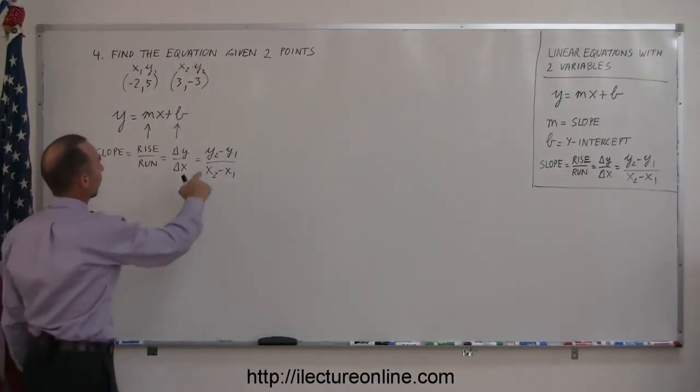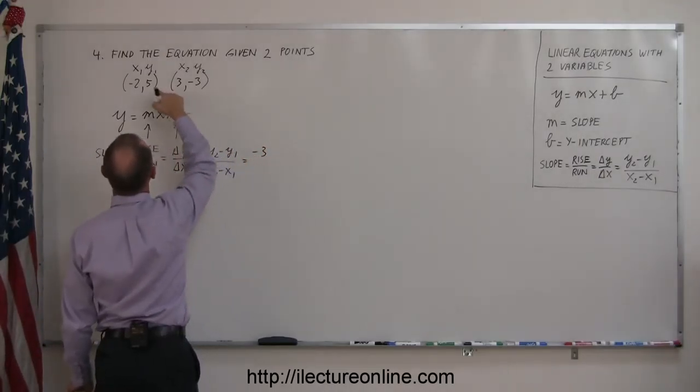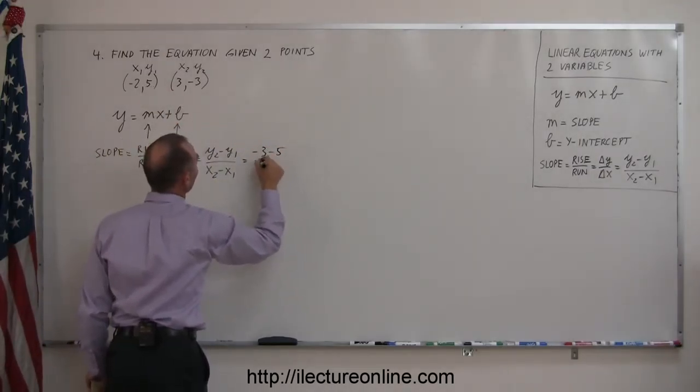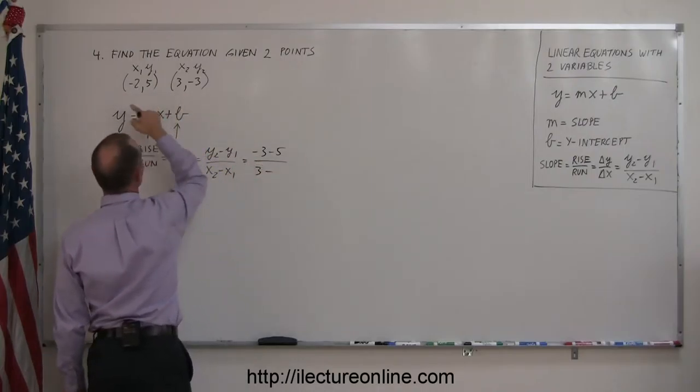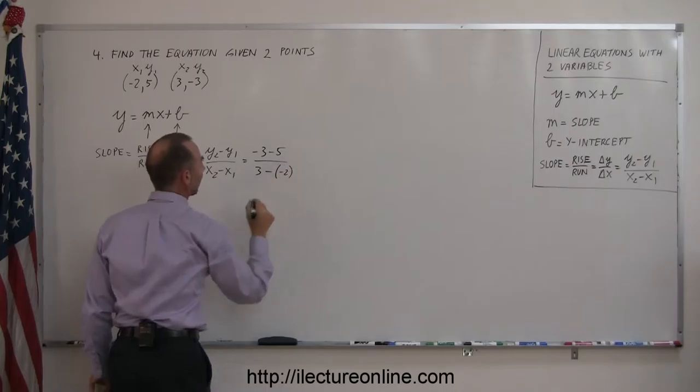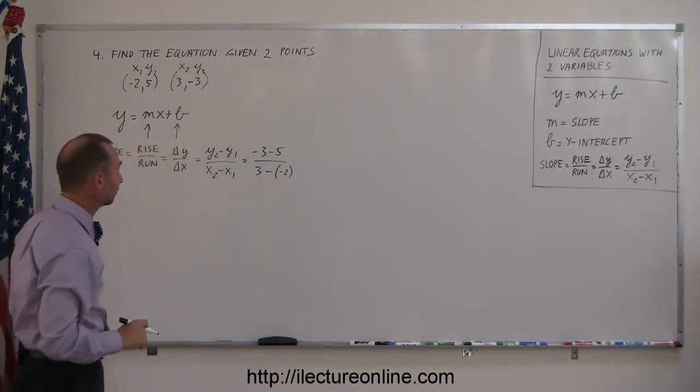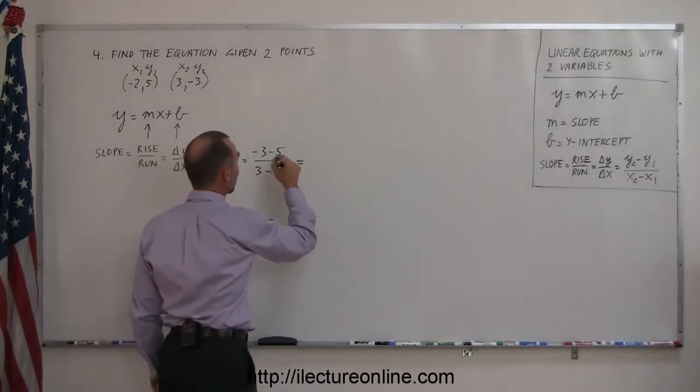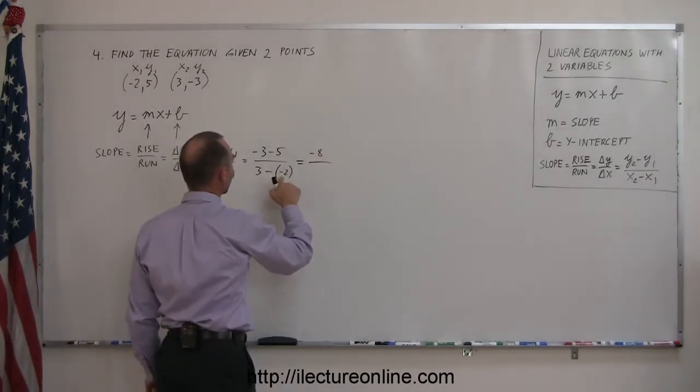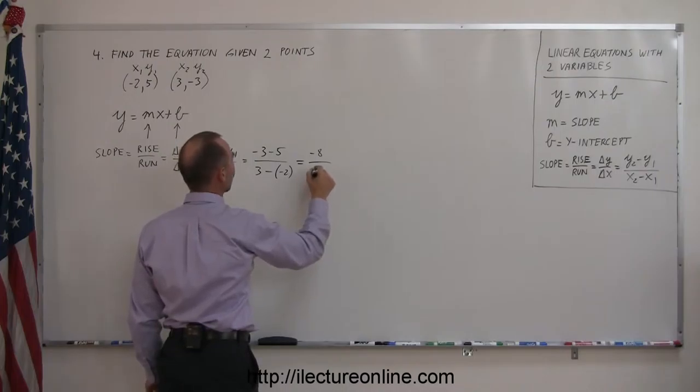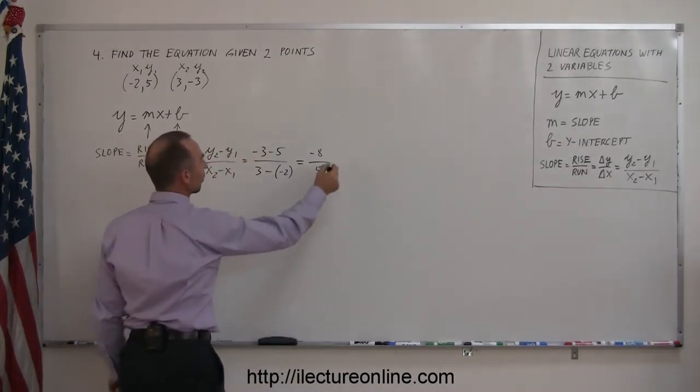Now we can plug those points in. y2 is negative 3 minus y1 which is 5, divided by x2 which is 3 minus x1 which is negative 2. If you subtract negative numbers, I suggest you put little parentheses around that. Negative 3 minus 5 is minus 8, divided by 3 minus negative 2, which is positive 5. Negative 8 over 5 is the slope.